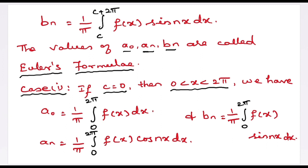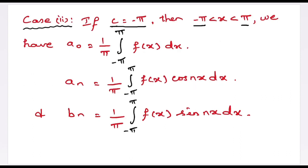There are three cases to note. First case: if c = 0, the interval becomes 0 to 2π, and the formulas reduce to a₀ = (1/π)∫[0 to 2π] f(x) dx; aₙ = (1/π)∫[0 to 2π] f(x)cos(nx) dx; bₙ = (1/π)∫[0 to 2π] f(x)sin(nx) dx. Second case: if c = −π, the interval becomes −π to π, and the formulas reduce to a₀ = (1/π)∫[−π to π] f(x) dx; aₙ = (1/π)∫[−π to π] f(x)cos(nx) dx; bₙ = (1/π)∫[−π to π] f(x)sin(nx) dx.